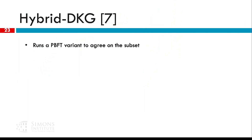In the literature, there is a protocol called Hybrid DKG, and also the Protect protocol, which basically employ a partial synchronous consensus in order to bootstrap this decision process. The problem is that they can only have a threshold of f plus one, which is not enough for VABA and HotStuff, and also there is a partial synchrony assumption. As a result, if you want it for a fully asynchronous protocol, then you need either initial bootstrap assumptions of some synchrony, or it doesn't work.